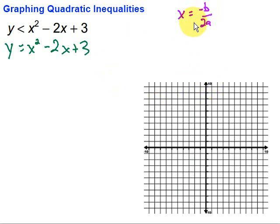And then we can find the vertex by putting in that x value, and that will give us our vertex. And then also remember that this right over here is my y-intercept. So I can use those things to graph my boundary line.